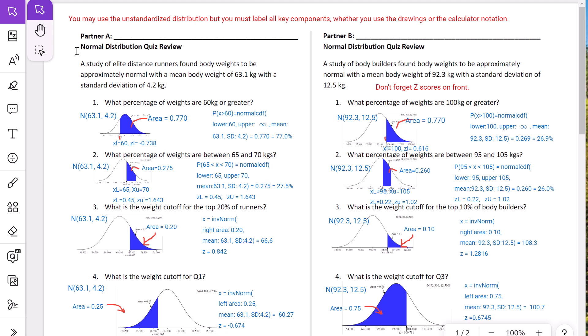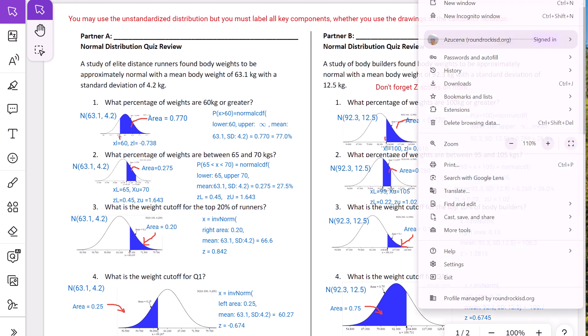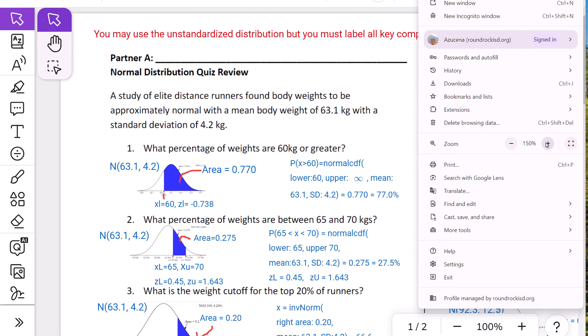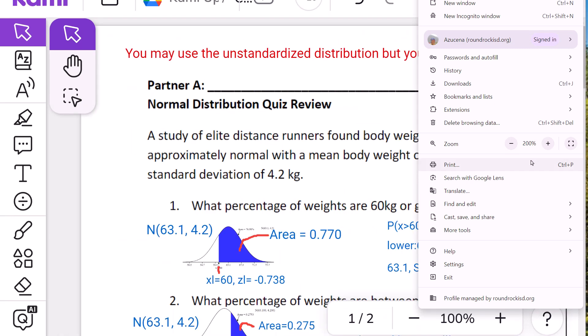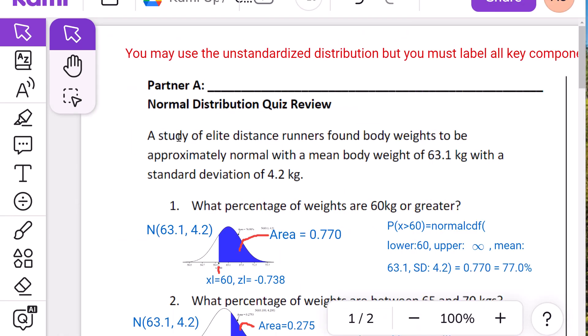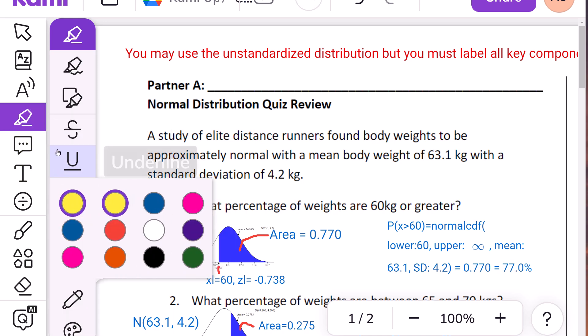As you look at these problems, I'm going to zoom in just a little bit to make it easier here. So here I'll just go down the left side. A study of elite distance runners found body weights to be approximately normal with a mean body weight of 63.1 kilograms. There's your mean. That we're going to be using that the whole time.